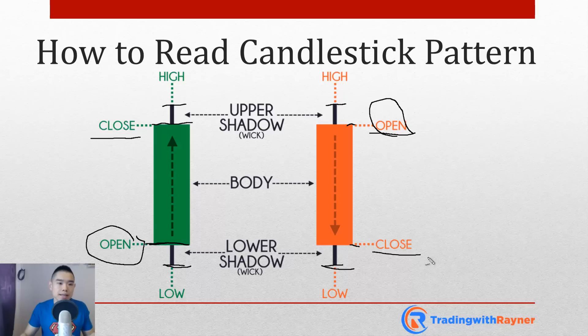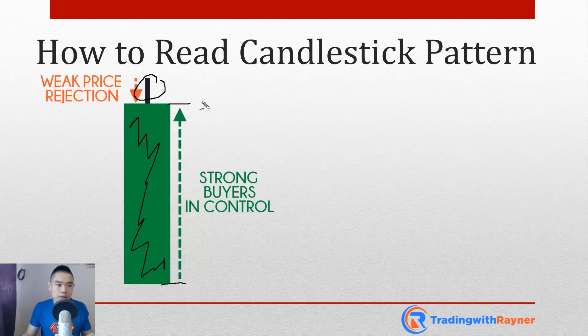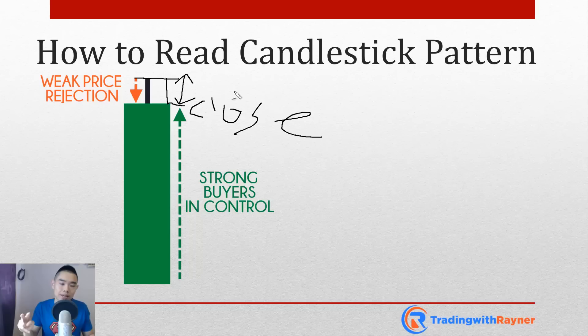Let's understand candlestick patterns in more depth. There are two main components: the body and the wick. The body tells you who's in control. In a bullish candle, buyers pushed price up from the open all the way to the close. The wick tells you there is price rejection — sellers pushed price from the highs back down before it finally closed lower. So there are two components: the body and the wick.